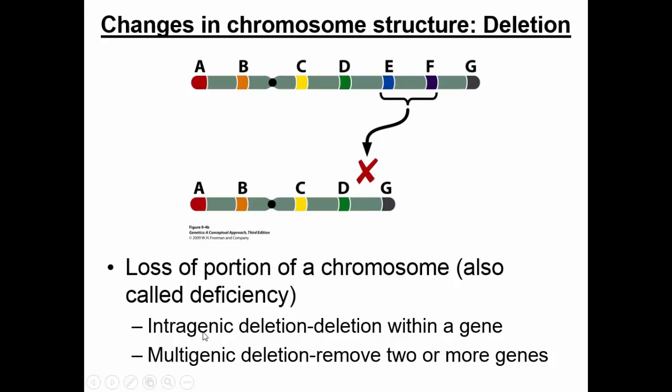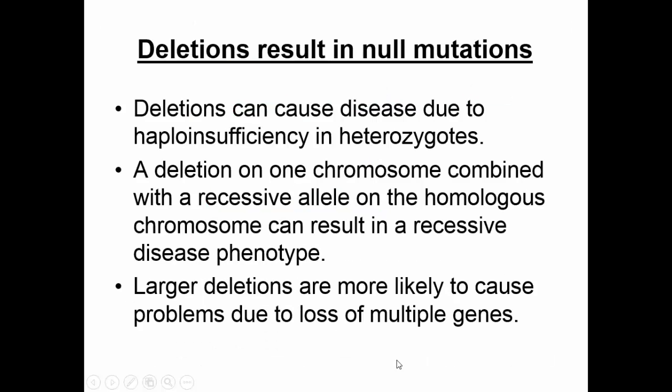There are different types of deletions. An intragenic deletion would be a deletion within a gene — a portion of one of the shaded areas. A multigenic deletion would be a removal of two or more genes. Deletions result in something called null mutations. What can happen, especially if you have a haploid individual, is if you have big A and little a, and you delete the big A, then the little a will show through. So the effect of a deletion, whether it's severe or not, really depends on exactly what allele is deleted.